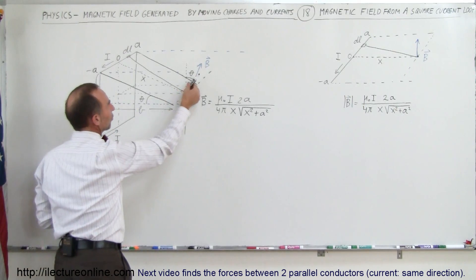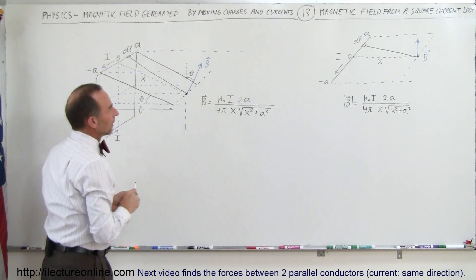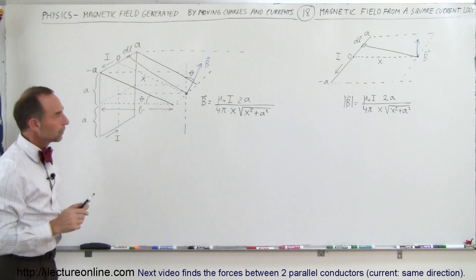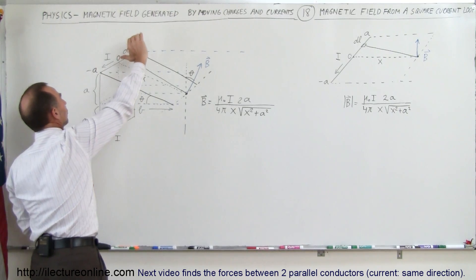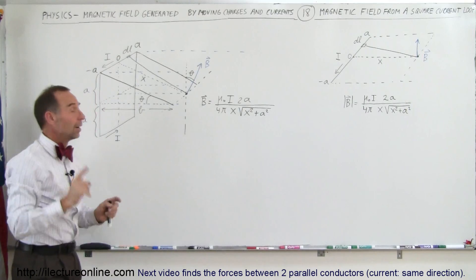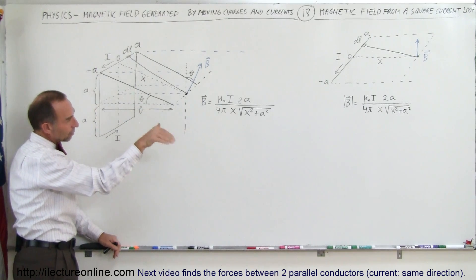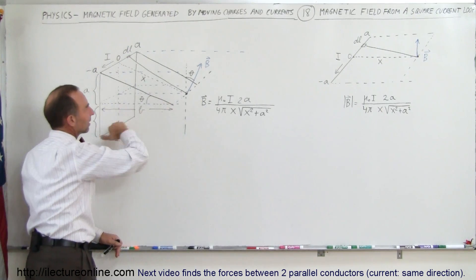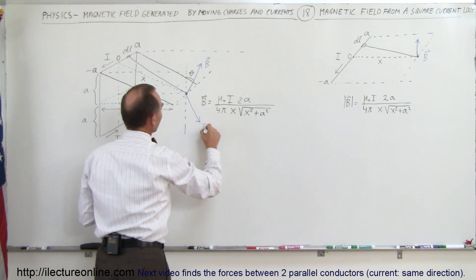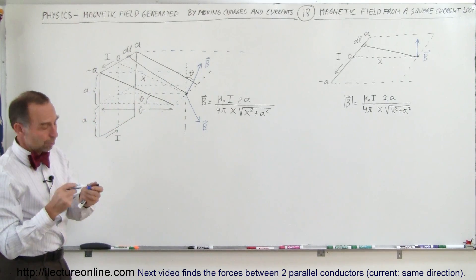There's one more difference: since the B field is no longer parallel to the vertical but slanted, we have to account for that. Consider the bottom portion of the square loop — using the right-hand rule, put your thumb in the direction of the current and your fingers curl up, showing the direction of the B field. For the bottom section, the thumb goes the other way and the B field is angled downward. Since the plane is angled, the B field points in a specific direction.